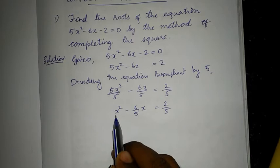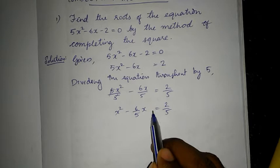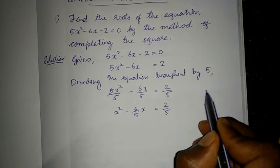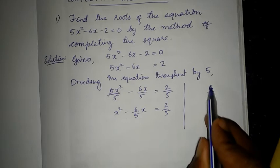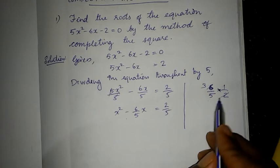Now goes the important step. We have to add a particular number to both sides — LHS and RHS. Which number? Check the coefficient of x only — that is 6/5. Take only the number, not the sign. Now take half of this number: (6/5) × (1/2) = 3/5. So we get 3/5.